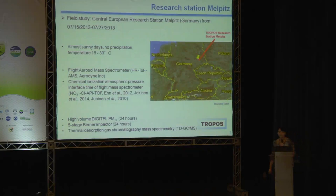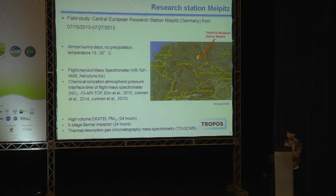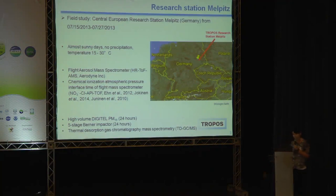For this we went to our research station — it's a GORE station — in summer 2013. On the map you can see it's located in the east part of Germany. It was summer, so we had almost sunny days, no precipitation, and temperatures between 15 to 30 degrees, meaning a lot of BVOCs were emitted. We brought a lot of instruments; the most important ones I'm going to talk about were the AMS and also the chemical ionization atmospheric pressure interface time-of-flight mass spectrometer. We also collected several samples using a digital impactor and ran thermal desorption gas chromatography mass spectrometry to determine the BVOC mixing ratios at our research station.